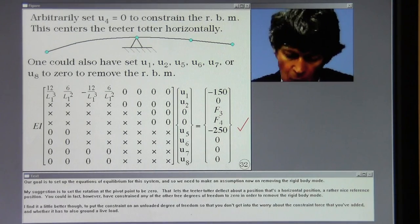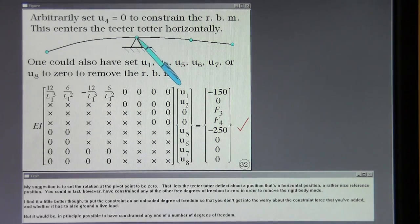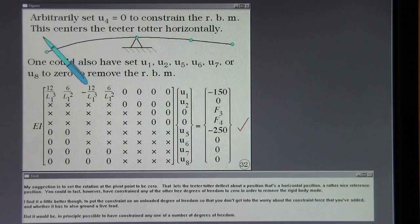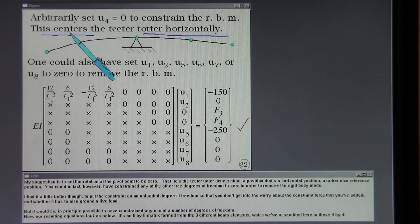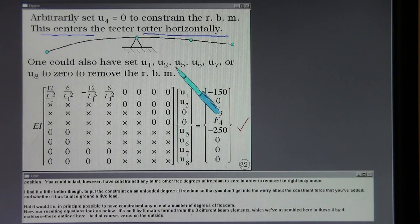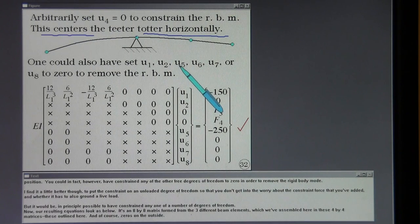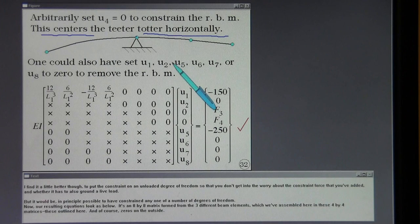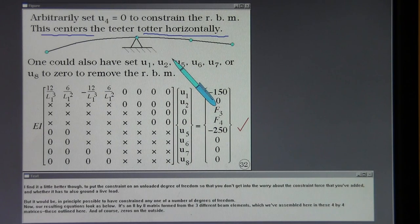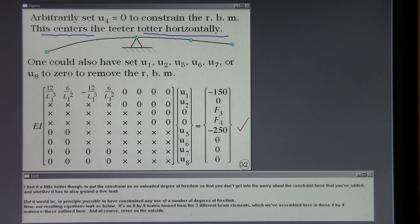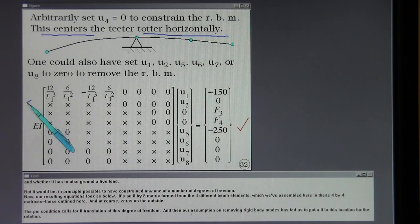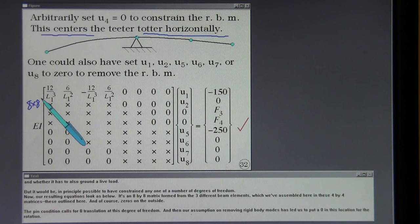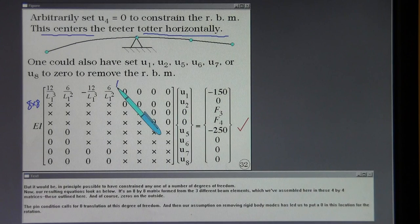Our goal is to set up the equations of equilibrium for this system and so we need to make an assumption now on removing the rigid body mode. My suggestion is to set the rotation at the pivot point to be zero that lets the teeter-totter deflect about a position that's a horizontal position rather nice reference position. You could in fact however have constrained any of the other free degrees of freedom to zero in order to remove the rigid body mode. I find it a little better though to put the constraint on an unloaded degree of freedom so that you don't get into the worry about the constraint force that you've added and whether it has to also ground a live load. But it would be in principle possible to have constrained any one of a number of degrees of freedom.